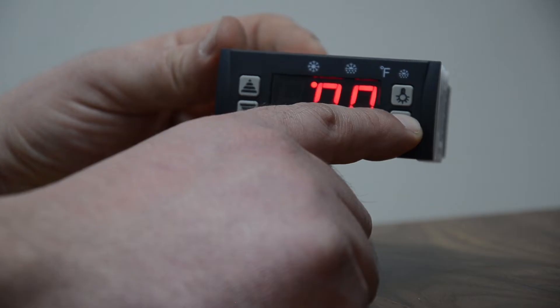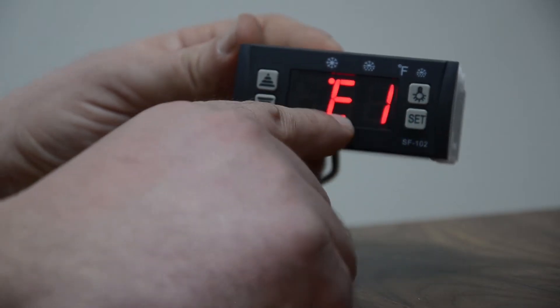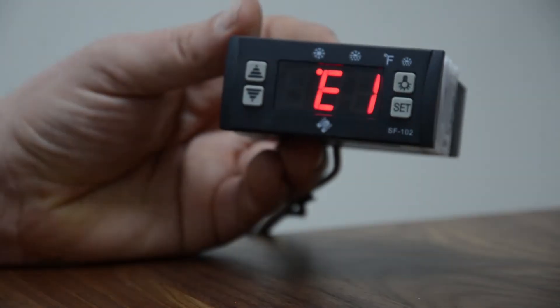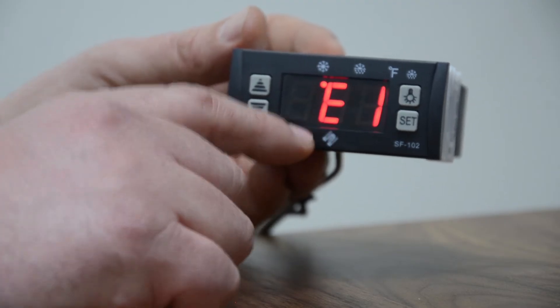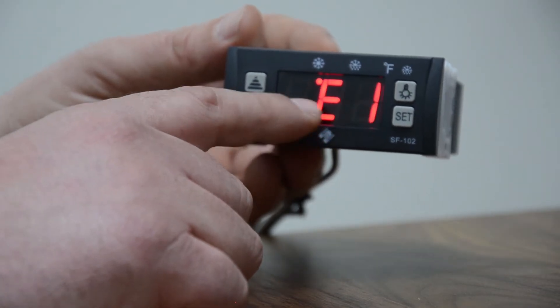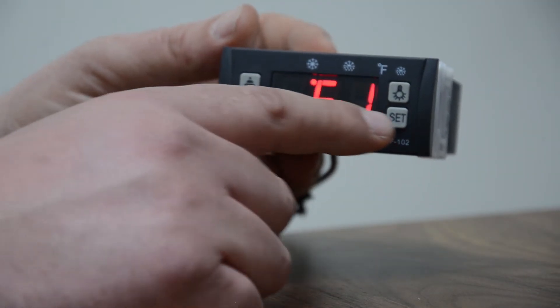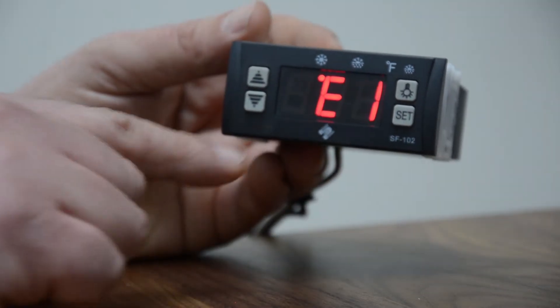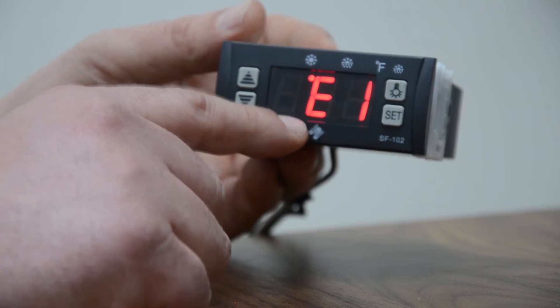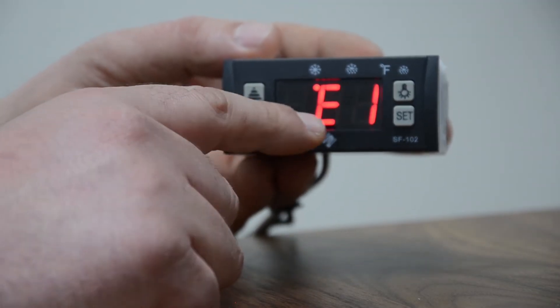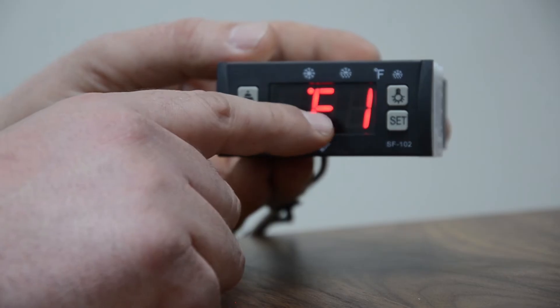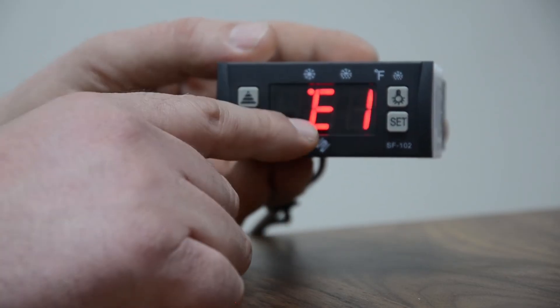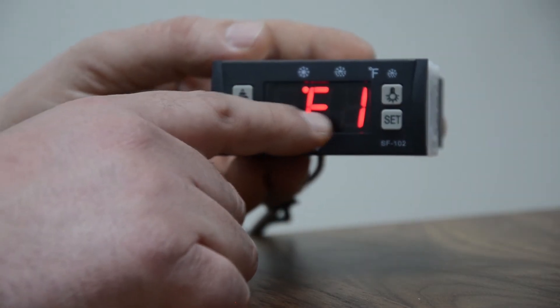E1, when you get into the parameters, you would have to do it quickly because it will lock you out, and you would have to press and hold the set button for five seconds to get back in. E1 is the lowest set point that we could get to, the lowest temperature that the unit we could set for the customer or for whoever is using it on that unit.